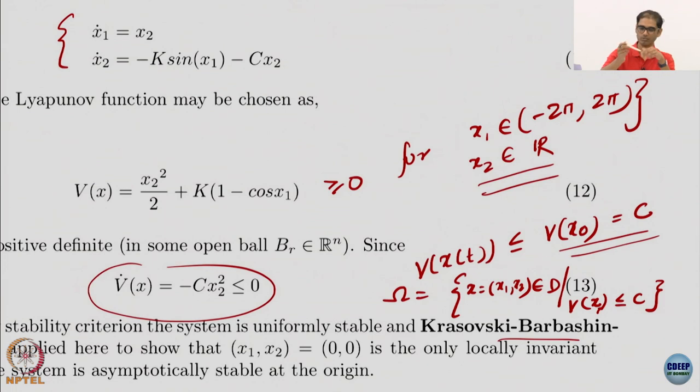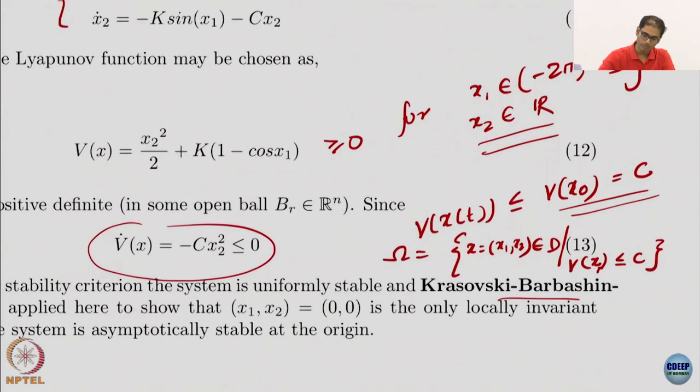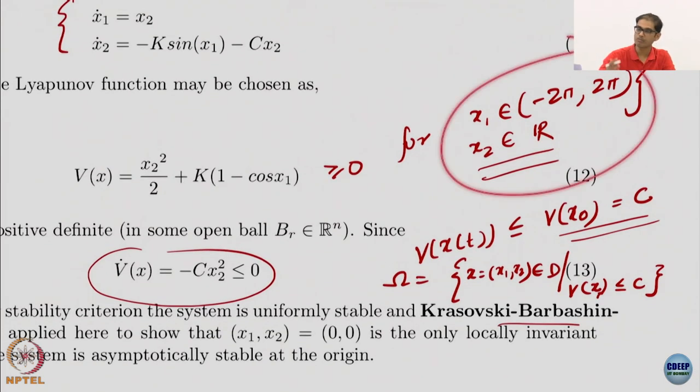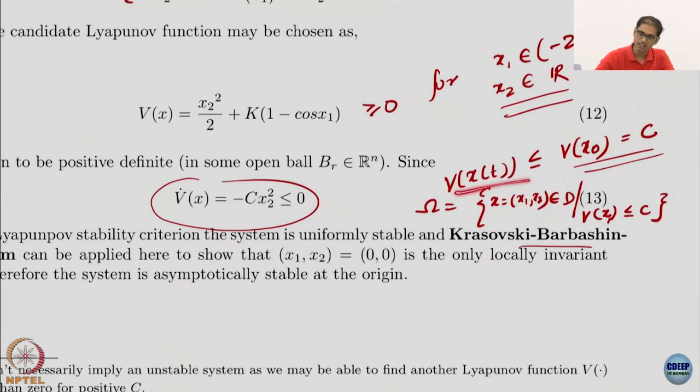And x2 can be in anything in R. Now, my problem is that this domain is not bounded. Therefore, I cannot use that as an omega, but I know that V is less than equal to c for all time, because from my V(x0).